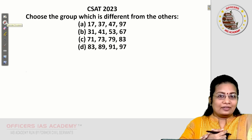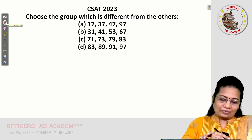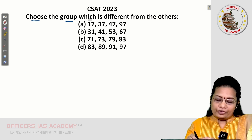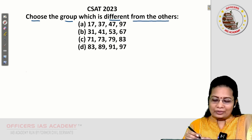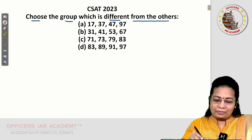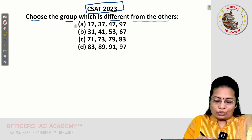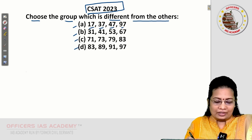Welcome to the CSAT series. Today's question: choose the group which is different from the others. This question was previously asked in CSAT 2023. The question shows four options. Option A: 17, 37, 47, 97.